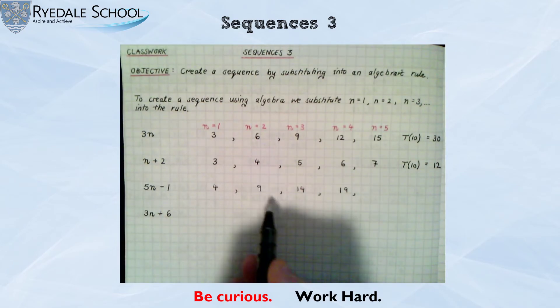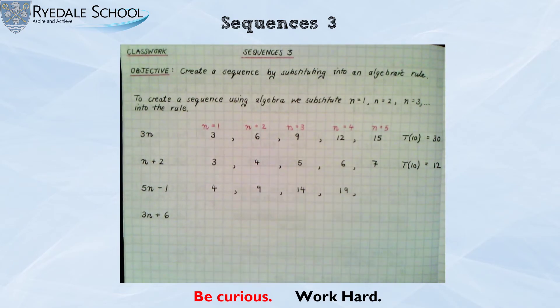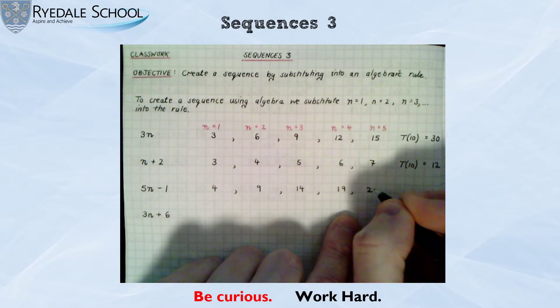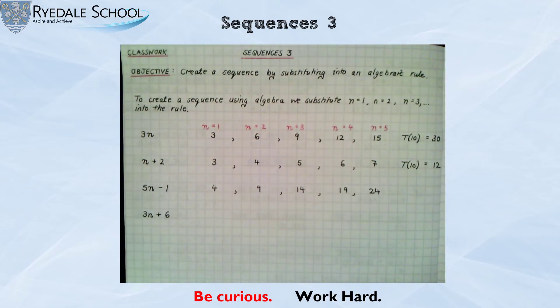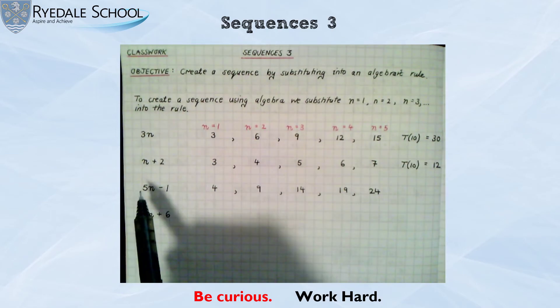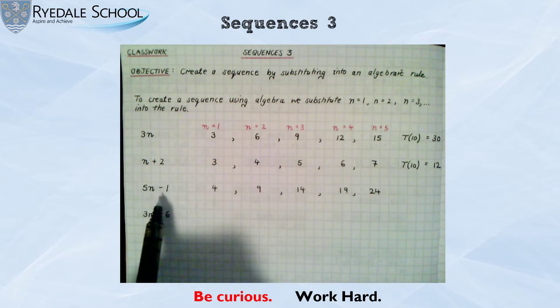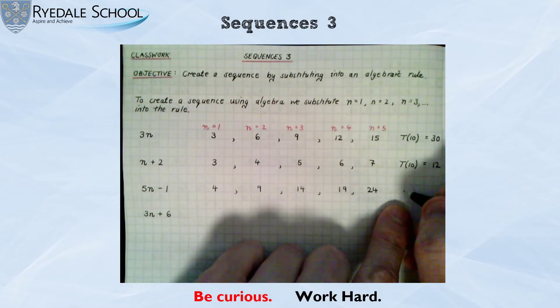And again, we can see a pattern in this sequence. This sequence is going up in 5s. So I know the next number straight away must be 24. But I could still check that. 5 times 5, 25, take away 1, 24.